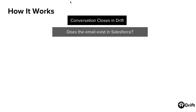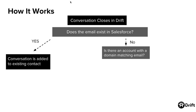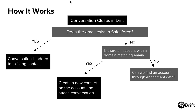Once a conversation is closed within Drift, we'll take the email and search your Salesforce to see if that email exists within your account. If it does, we'll simply add the conversation and any other activity to that existing record. If it does not, we'll look within your Salesforce to see if there's an account with a domain matching the email.